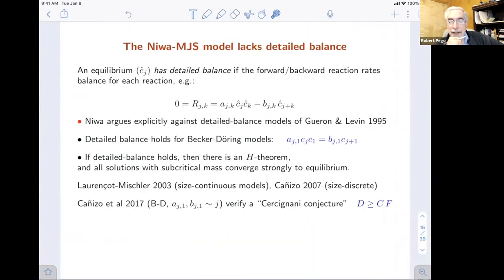There's a model that lacks detailed balance. That's the thing that struck us. Niwa argued explicitly against detailed balance models in the population biology literature, developed by Simon Levin in the 90s. Of course, if you have detailed balance, that's when the individual reaction rates for the J and K reactions vanish for each J and K. Then there's an H-theorem and free energy dissipation, free energy dissipates. Rather recently in the Becker-Doering case, Niethammer and collaborators verified a free energy inequality that allows them to prove exponential convergence to equilibrium with linearly growing rate coefficients.